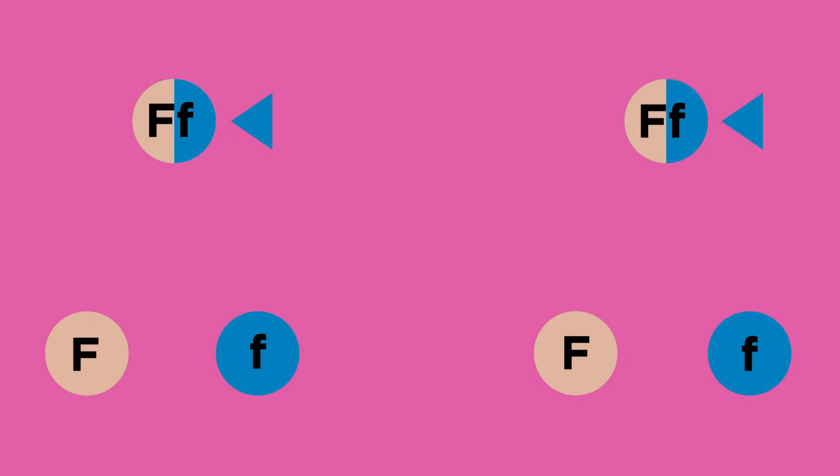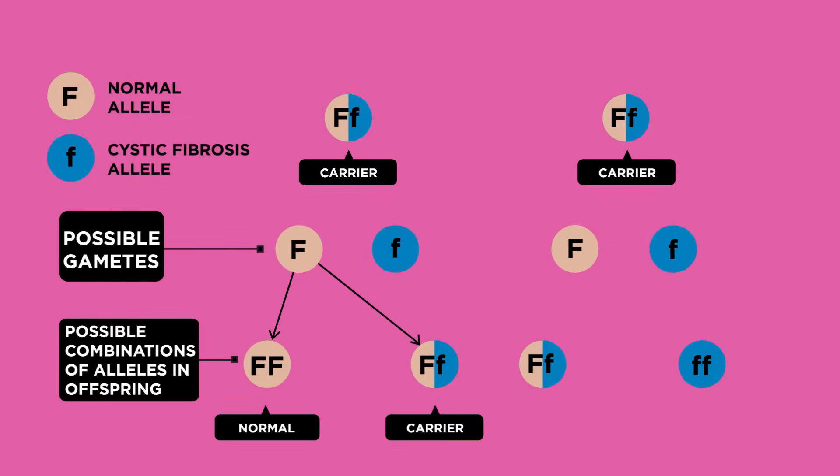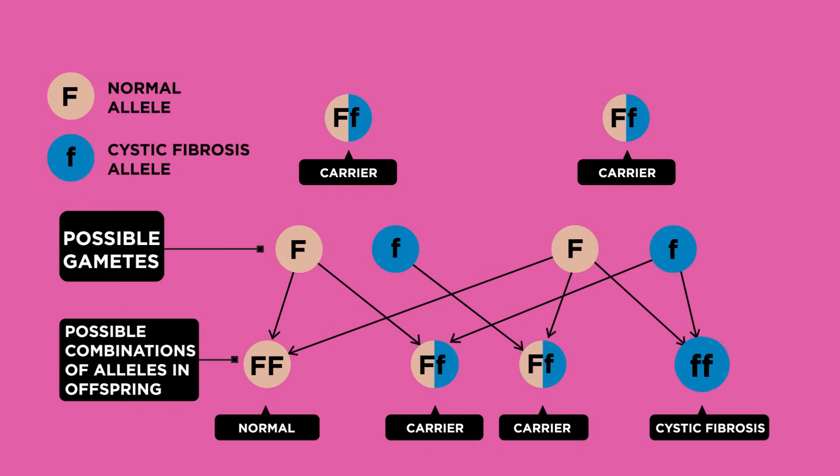The parents in the diagram are both carriers of the recessive allele little f. They do not have the disorder themselves but they could both pass the recessive allele to their children.